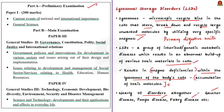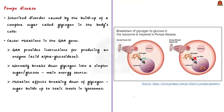Pompe disease is an inherited disorder caused by the buildup of a complex sugar called glycogen in the body's cells. The accumulation of glycogen in certain organs and tissues, especially the muscles, impairs their ability to function normally. Mutations in the GAA gene cause Pompe disease. The GAA gene provides instructions for producing an enzyme called acid alpha-glucosidase, which normally breaks down glycogen into a simpler sugar called glucose, the main energy source of most cells. When mutation happens, it affects the breaking down of glycogen, allowing this sugar to build up to toxic levels in lysosomes.